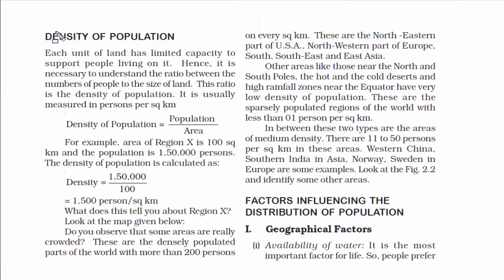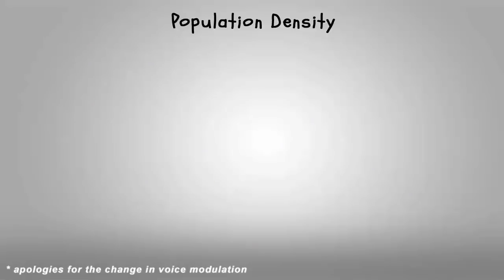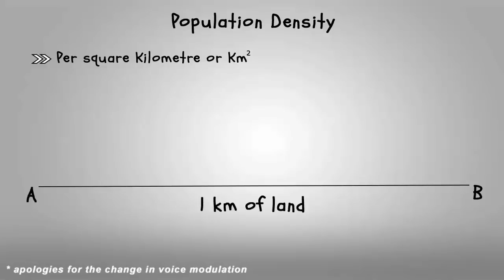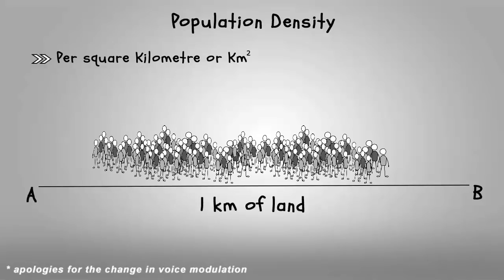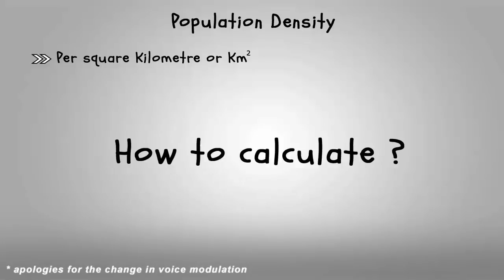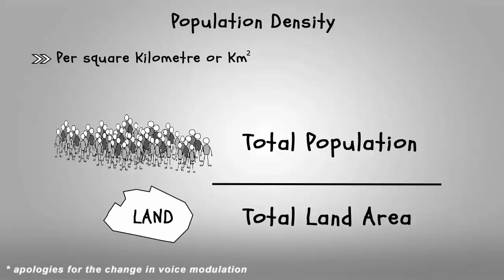The next topic is density of population. Population density is always expressed in per square kilometer. Consider the distance between A to B as one kilometer — the total number of people staying in this one-kilometer piece of land is called population density. The most common way to calculate it is to divide the total population of an area by the total land area. Population count is collected from census and land area from local municipality, and then you divide both to get population density.